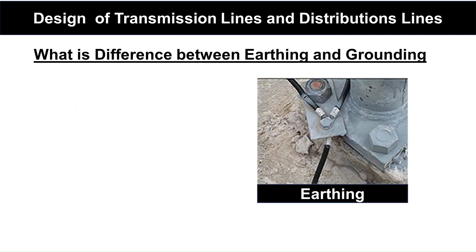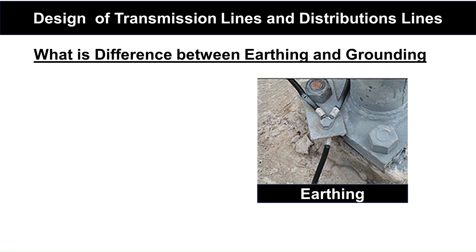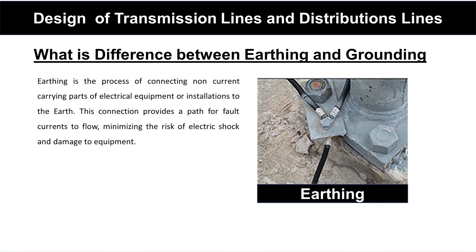What is the difference between earthing and grounding? There are two terms: earthing and grounding, and this question is generally asked in interviews. Earthing is the process of connecting the non-electrical part of an electrical equipment or installation to the earth. This connection provides a path for fault current to flow, minimizing the risk of electrical shock and damage to equipment. For example, the connection between the tower footing and the earth rod, or between the equipment body and the earthing electrode, is called earthing.